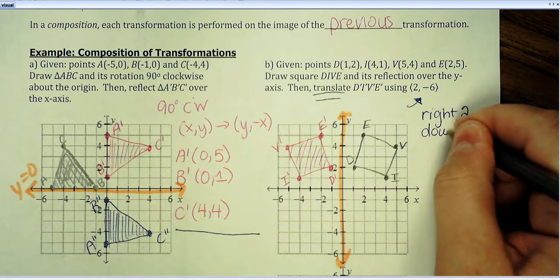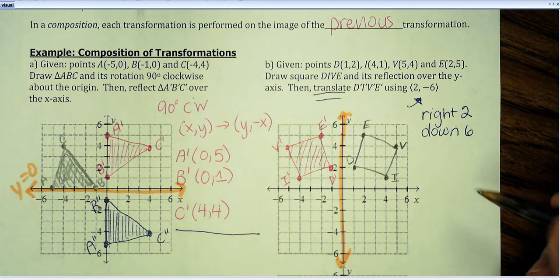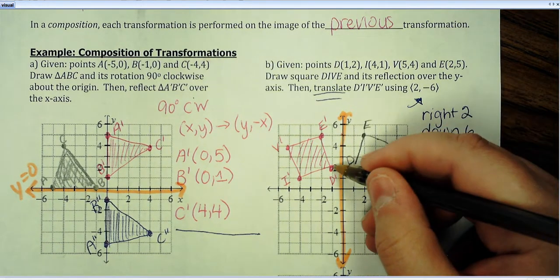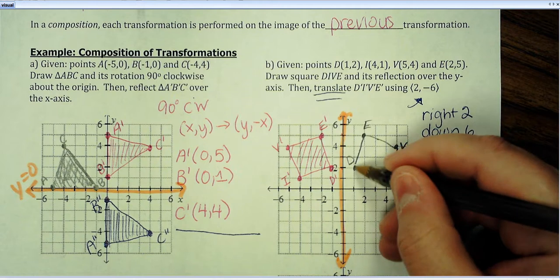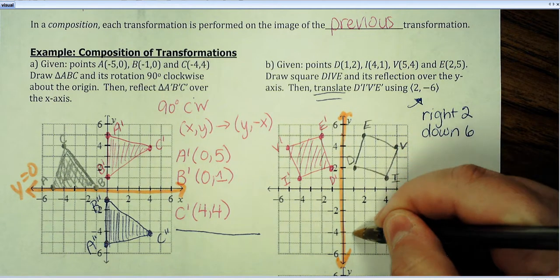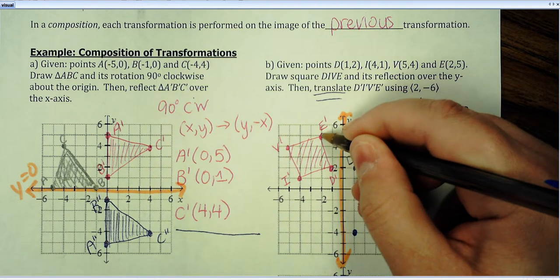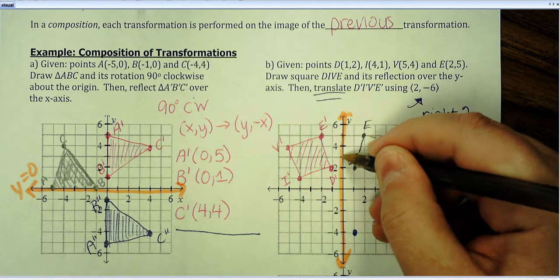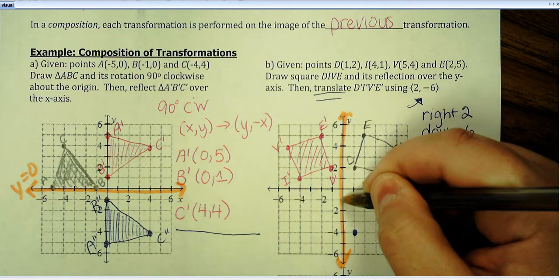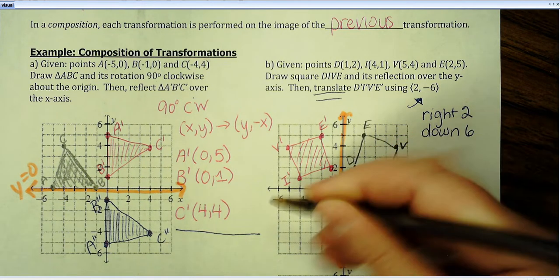So, each point, I'm going to take and shift. So, here's D. I'm going to go over two, and then down six. And, I'm just going to repeat that process. Here's E prime, over two, down six. And, just repeat that for each one. Here's I, over two, down six.